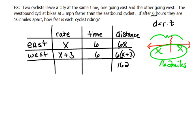Let's create our equation now. Our equation is 6x, which is the first person's distance, plus 6 times x plus 3, which is the second one's distance, should equal a total of 162 miles.